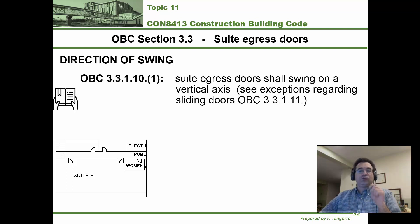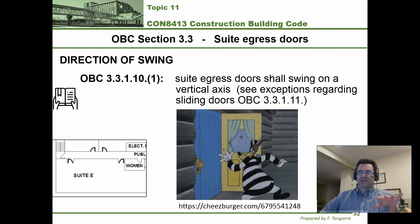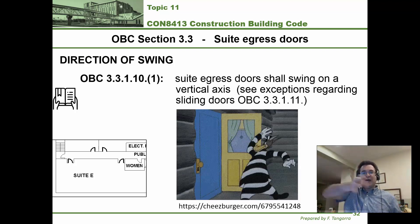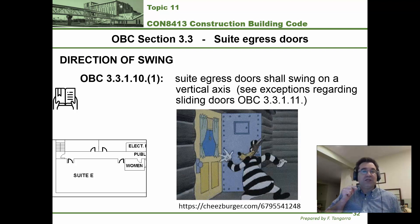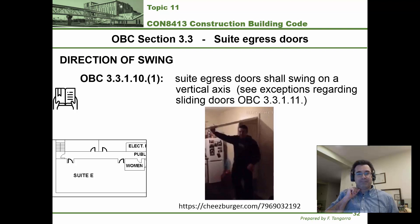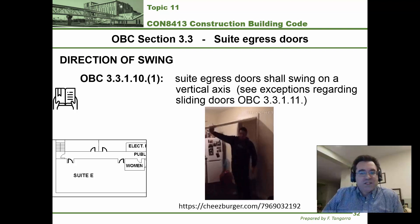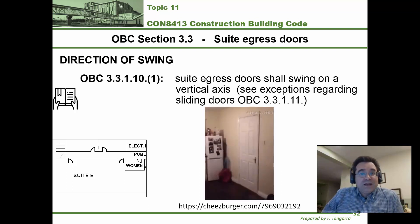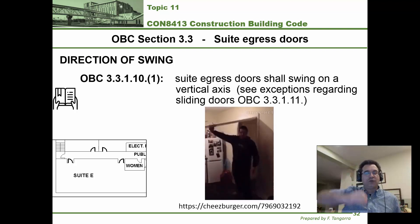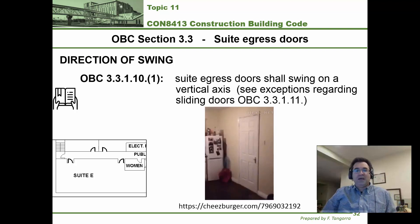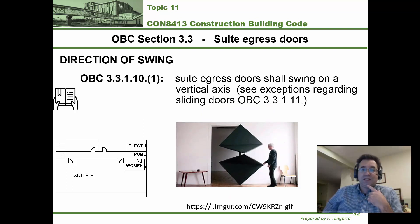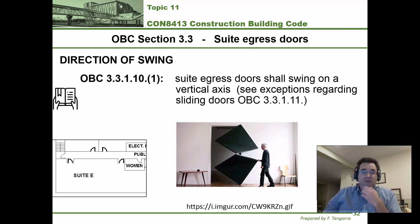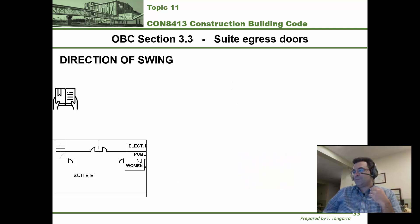When a door swings as an egress door, it must swing along a vertical axis — meaning the hinges are along a vertical axis and the door opens like a standard swinging door. This is to distinguish it from a door that opens along a horizontal axis, where anybody behind you gets slammed by the door closing under its own weight. It also distinguishes it from sliding doors or other non-standard door types. Whenever you have an egress door, it must swing along a vertical axis.